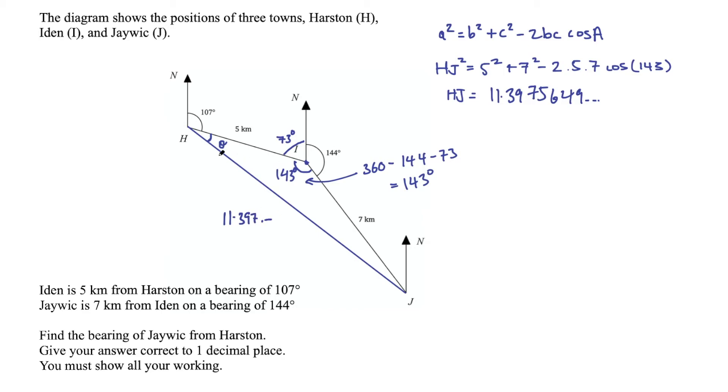All right, so we have this length of HJ now, 11.397 and so on. And now re-evaluate the problem. Remember what you're looking for. You're looking for this angle in here. How can we find that angle now? Well, we can use the sine rule because now we have all of the sides of the triangle and one angle in that triangle. That indicates you can use the sine rule. So we can say the sine of that angle, sine of theta over its opposite side of 7, equals the sine of 143 over its opposite side, which is the answer we just got. So 11.397 and so on. Okay, so then we can say sine of theta equals 7 times this.